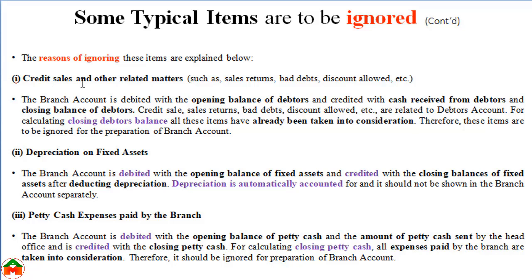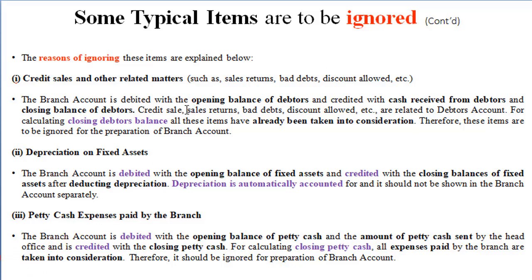There is no need to provide journal entries for credit sales or related matters such as sales return, bad debts, and discount allowed, because the branch account is debited with the opening balances of debtors and credited with the cash received from debtors as well as closing balances of debtors. In the closing balances of debtors we adjust all issues such as credit sales, sales return, and bad debts, so we don't need to repeat these items.